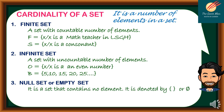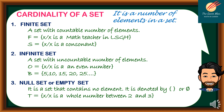The last type of cardinality is a null set or empty set, meaning it is a set that contains no element. It is denoted by a specific symbol, used one at a time. For example, T = {X | X is a whole number between 2 and 3} — there is no whole number between 2 and 3. Another example: B is the set of months with 35 days.